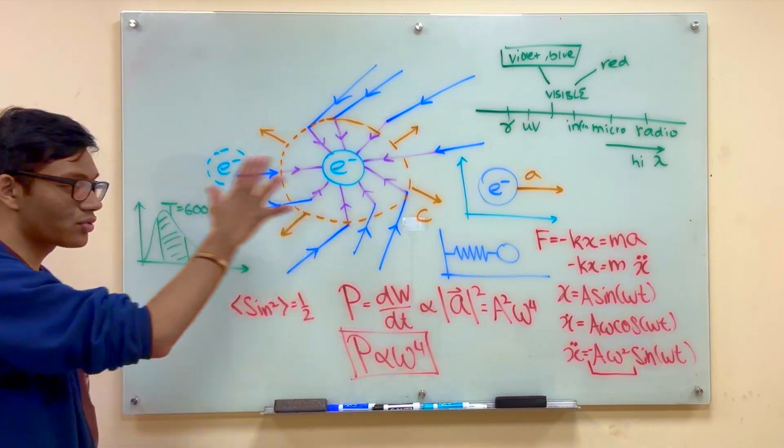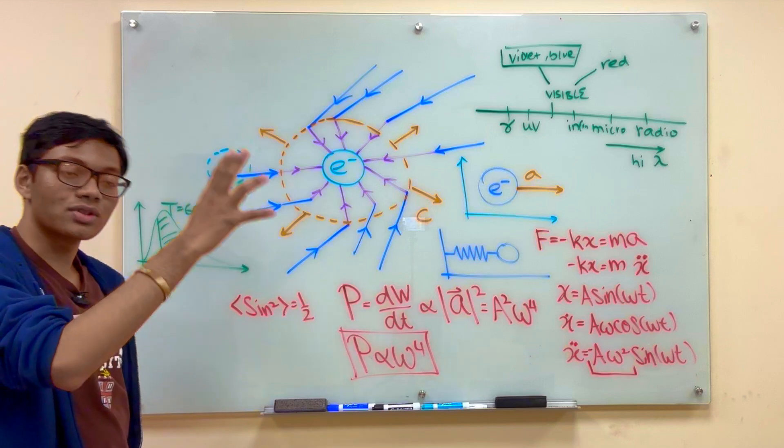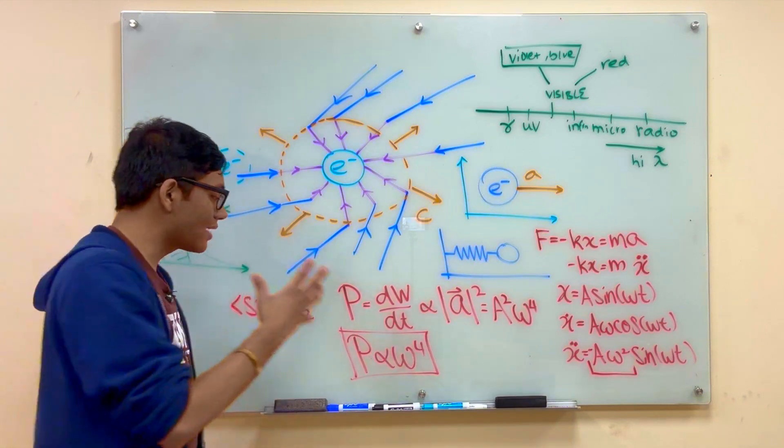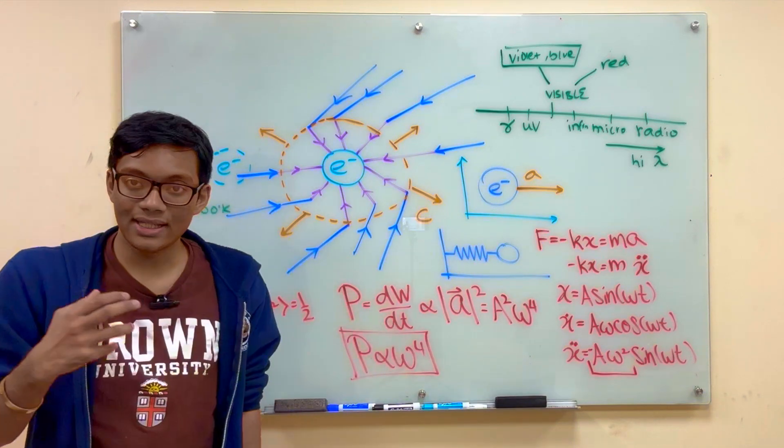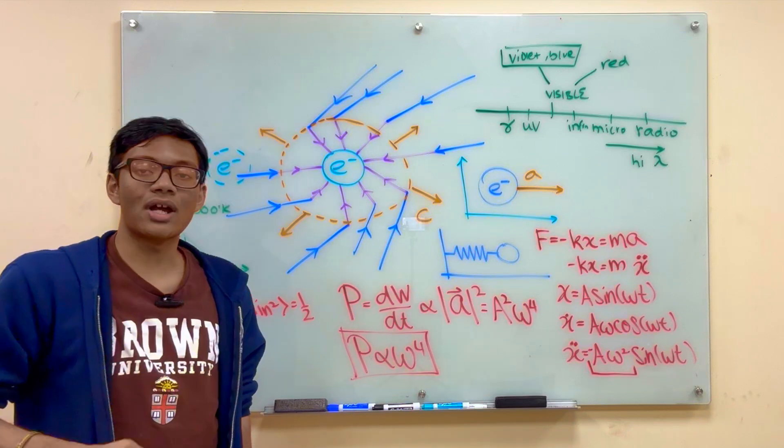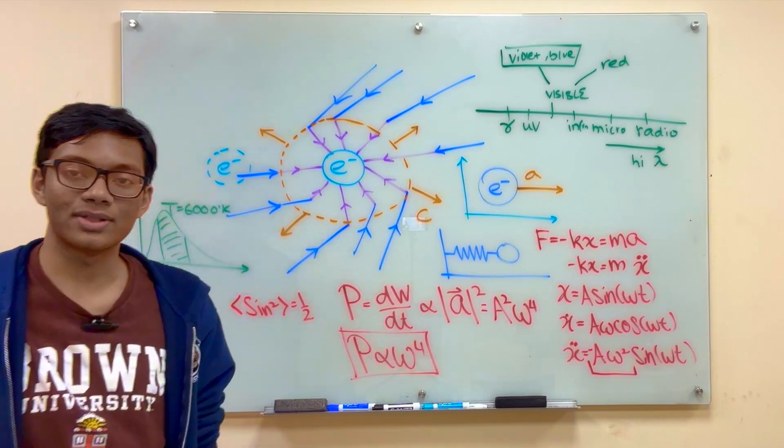So in the next episode, we're going to generalize electromagnetism to gravity to show the analog of Larmor radiation is gravitational radiation, also known as gravity waves. I'll see you in the next episode.